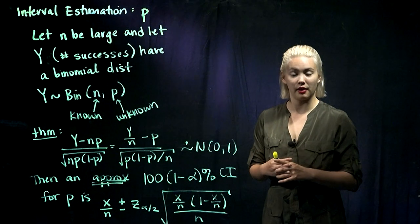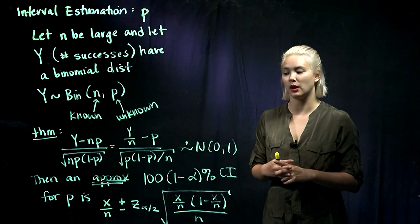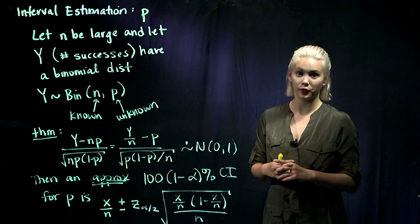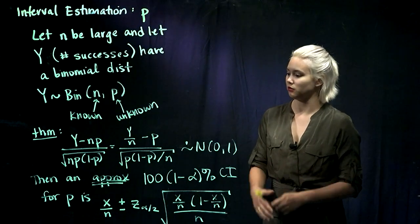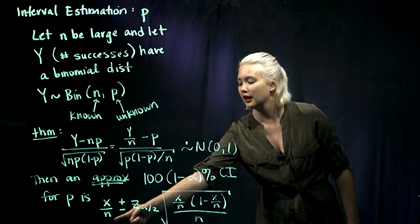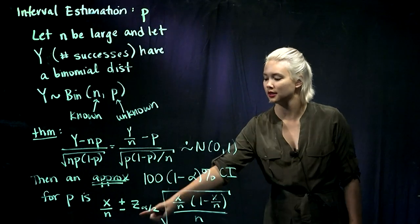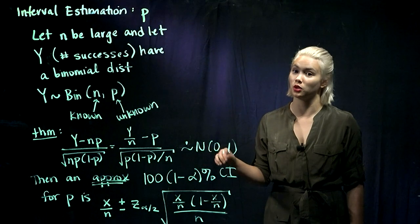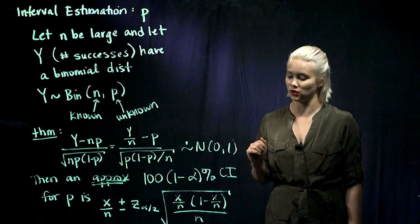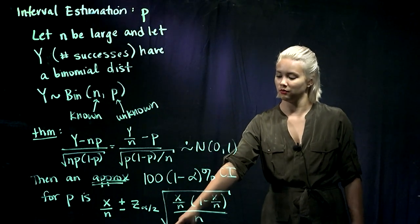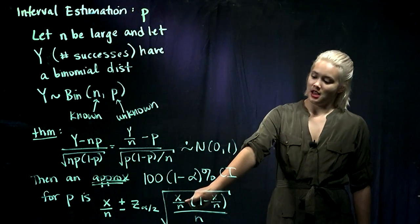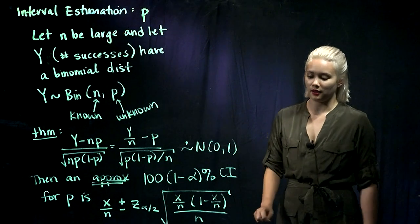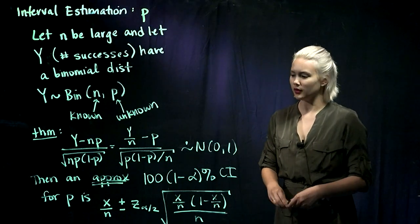We'll just assume approximately is good enough as long as we have a pretty large sample size. So if we want to have an approximate 100 times 1 minus alpha percent confidence interval for p, it'll be the number of successes divided by n, plus or minus the z that corresponds to this level of confidence, times the square root of x over n times 1 minus x over n, divided by n.